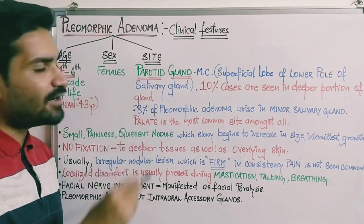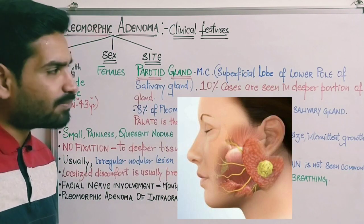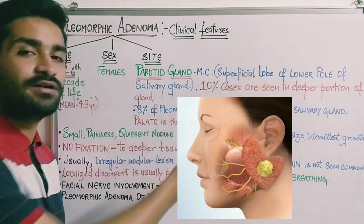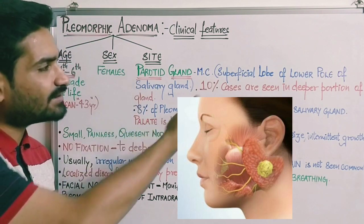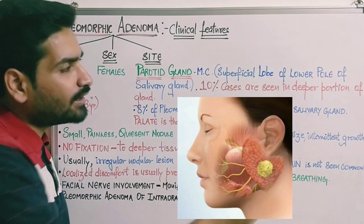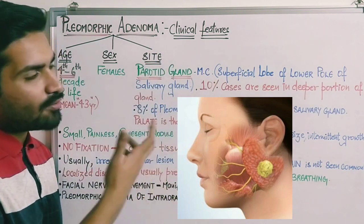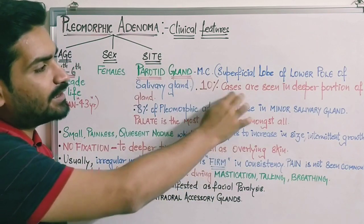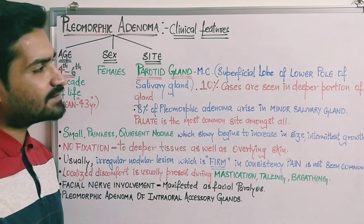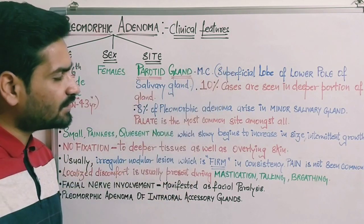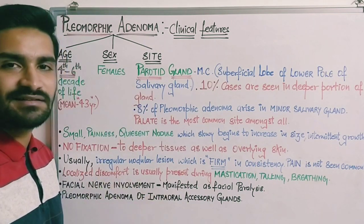The most common site of occurrence of pleomorphic adenoma is the parotid gland, making it essentially a tumor of the parotid gland. Within the parotid gland, the superficial lobe is most commonly affected — 90% of cases of pleomorphic adenoma are seen in the superficial lobe, specifically in the lower pole. The deeper portion of the parotid gland is affected in only 10% of cases.